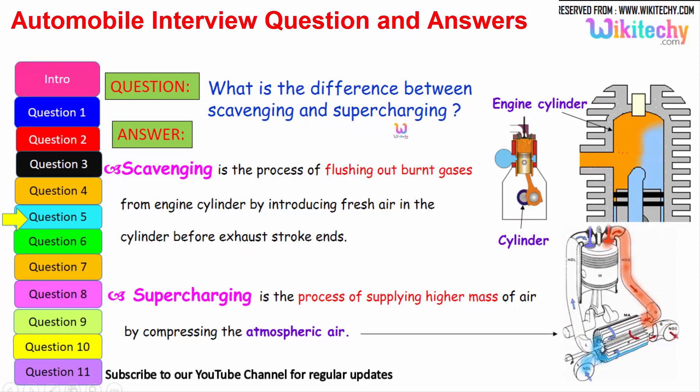Let us move on to the different question. What is the difference between scavenging and supercharging? Scavenging is the process of flushing out the burnt gases from the engine cylinder by introducing fresh air in the cylinder before exhaust stroke ends. But supercharging is the process of supplying high masses of air by compressing the atmospheric pressure. That is referred to as supercharging. You can see a high pressure of air is injected into the cylinder.